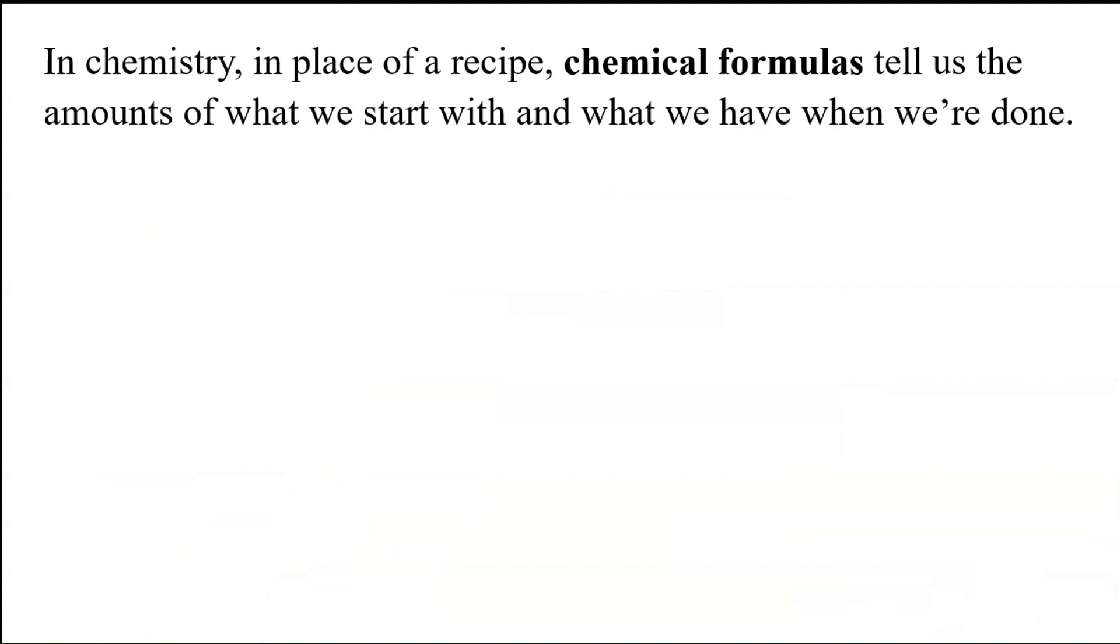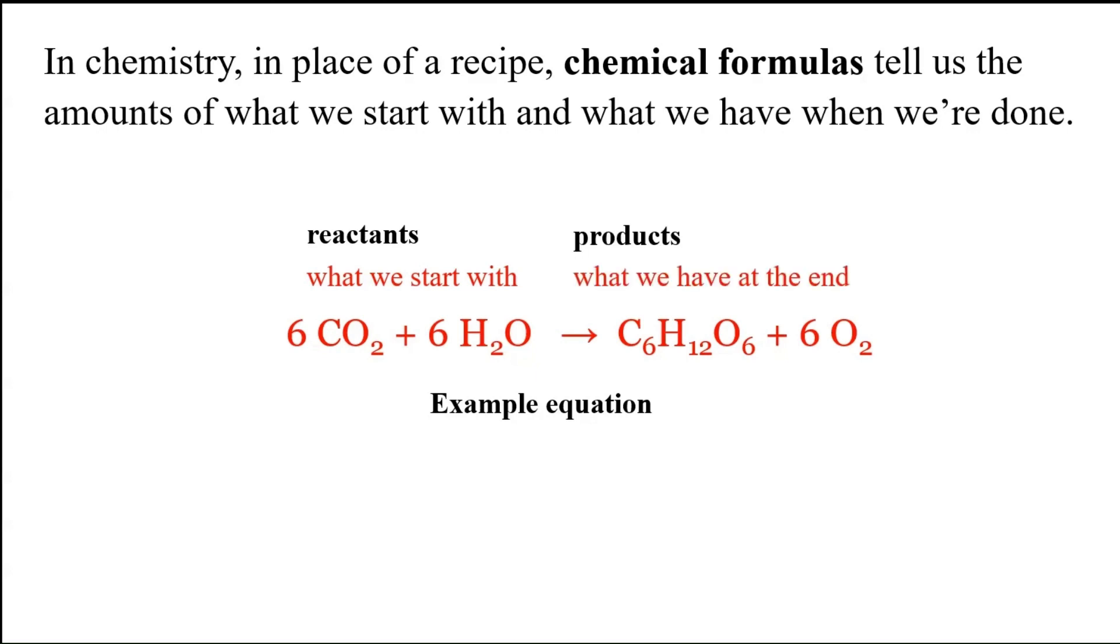So in chemistry, we don't have recipes. We have chemical formulas to tell us what amounts of stuff we start with and what we're supposed to have when we're done. As an example here, we've got essentially an abbreviation for the photosynthesis reaction. It's carbon dioxide and water forming sugar and oxygen. The reactants are what we start with and the products are what we have at the end. Usually stoichiometry involves predicting exactly what amount we'll end up with if we start out with a different amount than what is shown in the chemical equation.